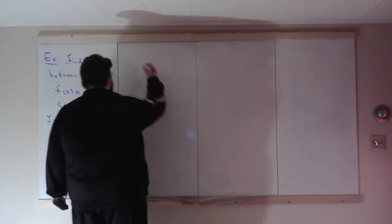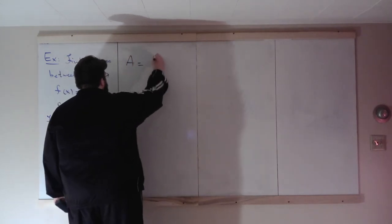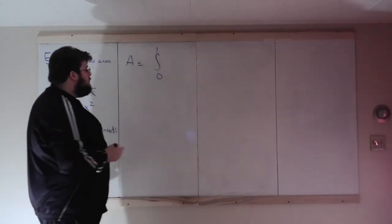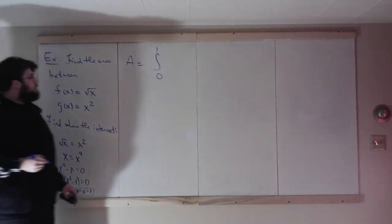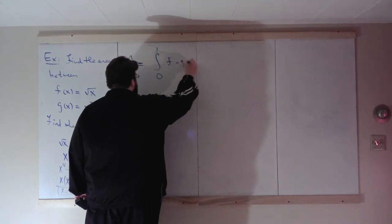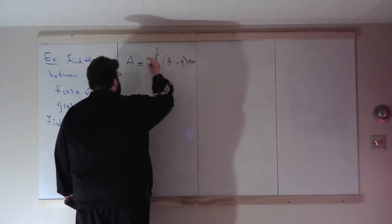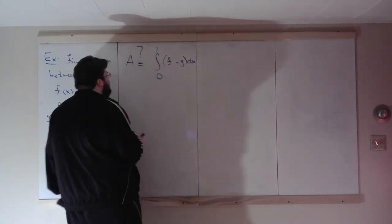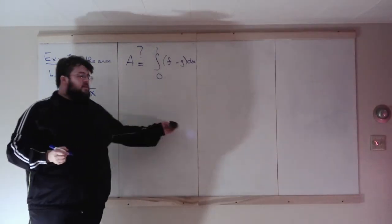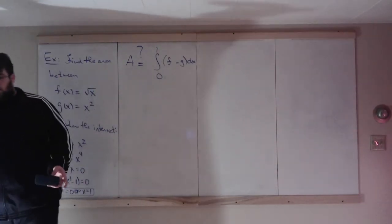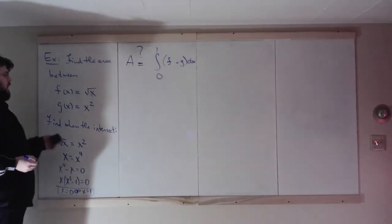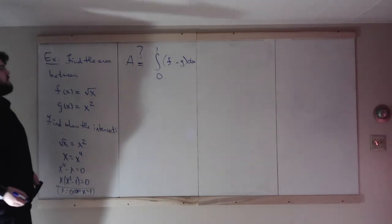So that would tell us the area is the integral from 0 to 1. Let's write it like this: F minus G with respect to X, with a question mark, because we have two functions and we don't know which one is on top. F could be on top or G could be on top.